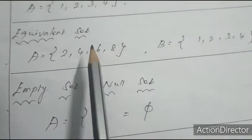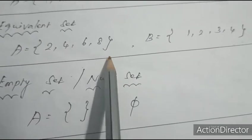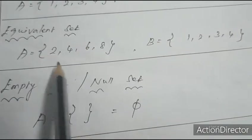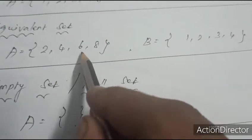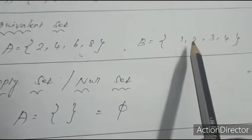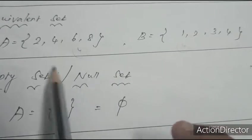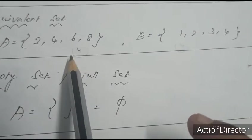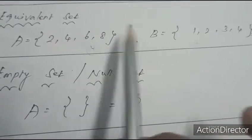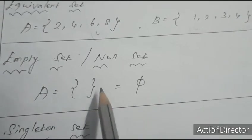Next, equivalent set: A = {2, 4, 6, 8} and B = {1, 2, 3, 4}. The set A has 4 elements and set B has 4 elements. The elements are different, but the total number of elements is the same — A has 4, B has 4. Therefore these sets are equivalent sets.